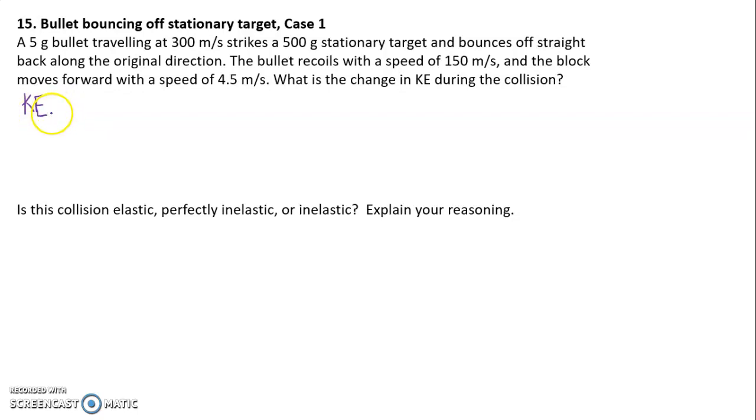So the kinetic energy initial... Let's just go ahead and plug in the numbers. I already showed you how to do the equation, so we'll go ahead and put in the mass: 0.005 kilograms times 300 meters per second quantity squared. Make sure you get those parentheses. We don't want to just square the seconds. Plus zero, the target was stationary. And so the amount of energy there before the collision, 225 joules.